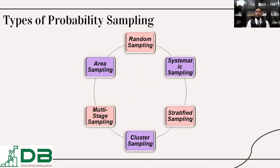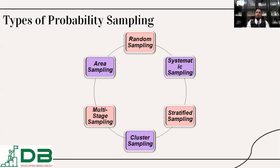Types of probability sampling: probability sampling can be determined into six specific types. First, random sampling — if we have 100 people in the population and would like to select 25, and each individual has an equal chance of being selected, that is random sampling. Systematic sampling is a technique where we select every fourth or every fifth individual from the 100, ultimately finding 25 samples but excluding others according to systematic procedures.